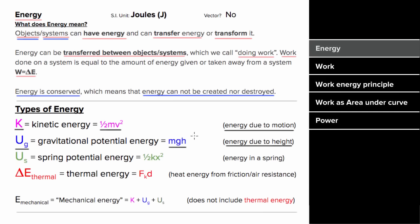Height above what? Height above whatever you're choosing as the h equals zero reference line. Is that cheating? No, because all that really matters is the change in gravitational potential energy, not the actual value itself.